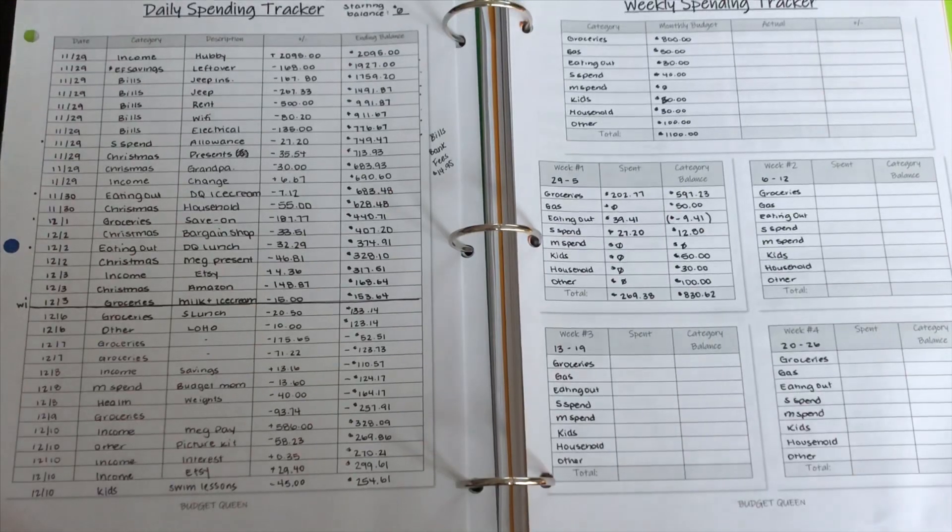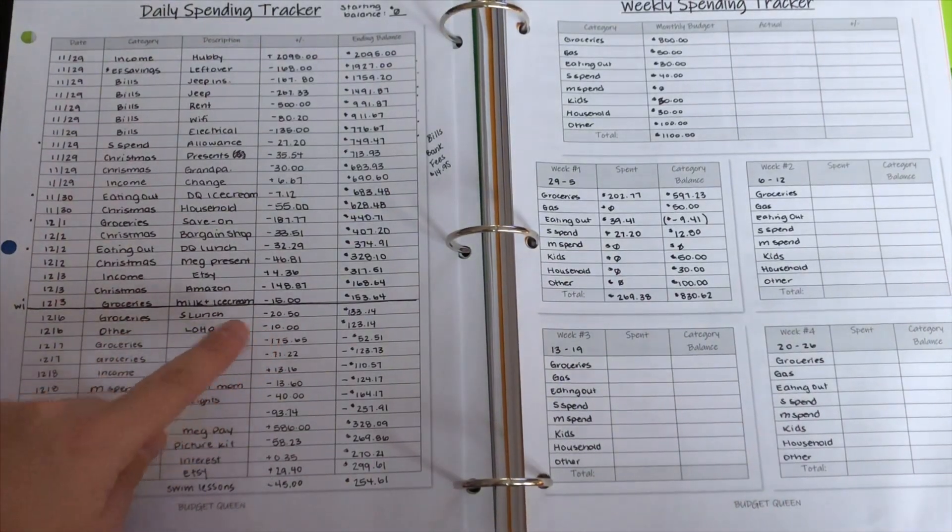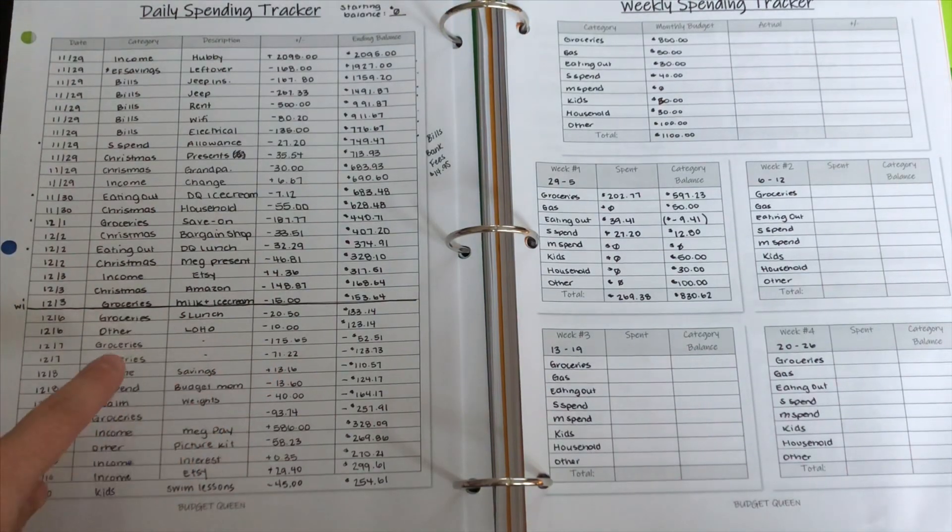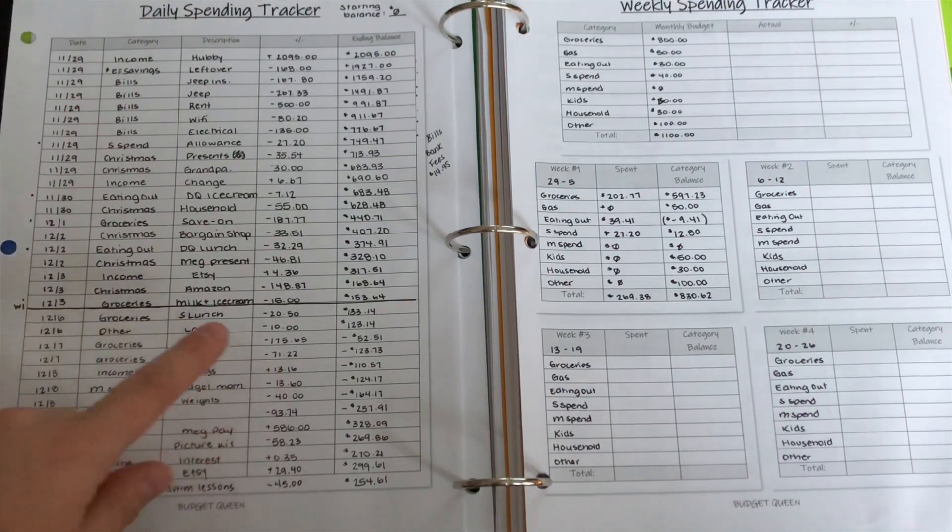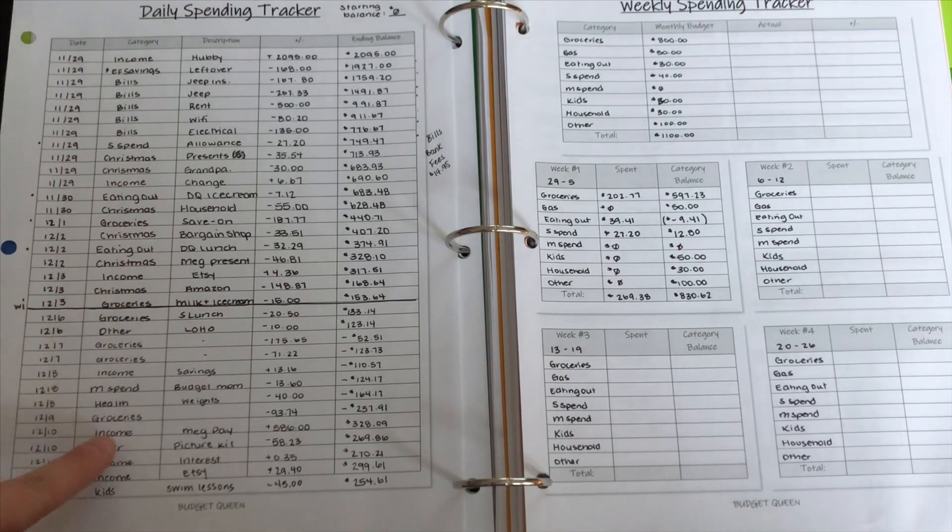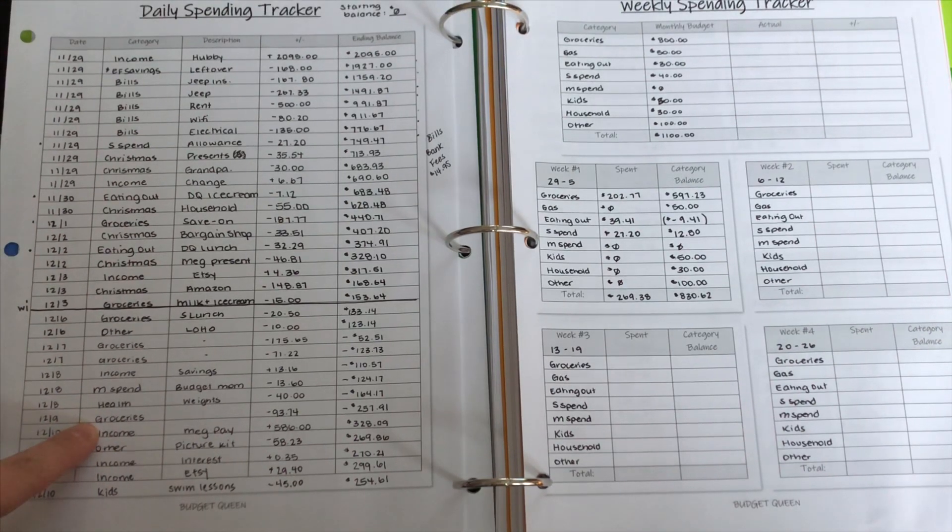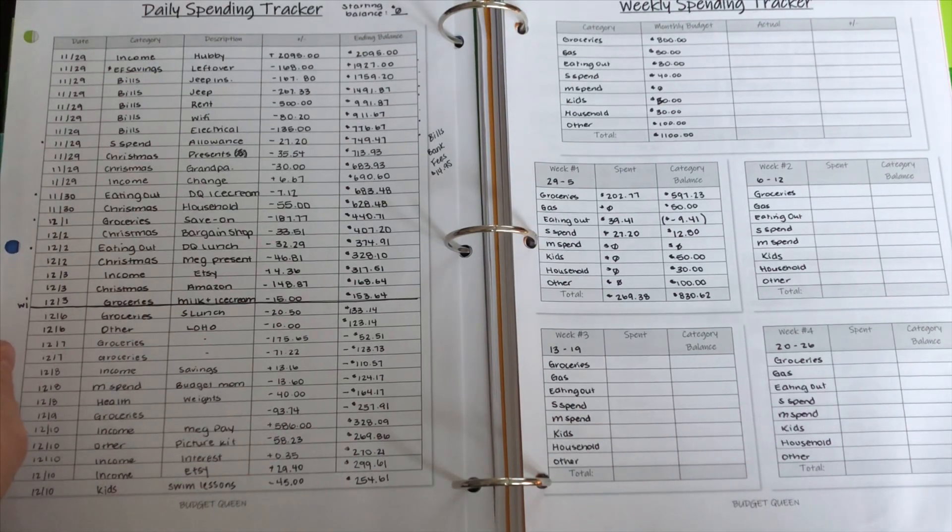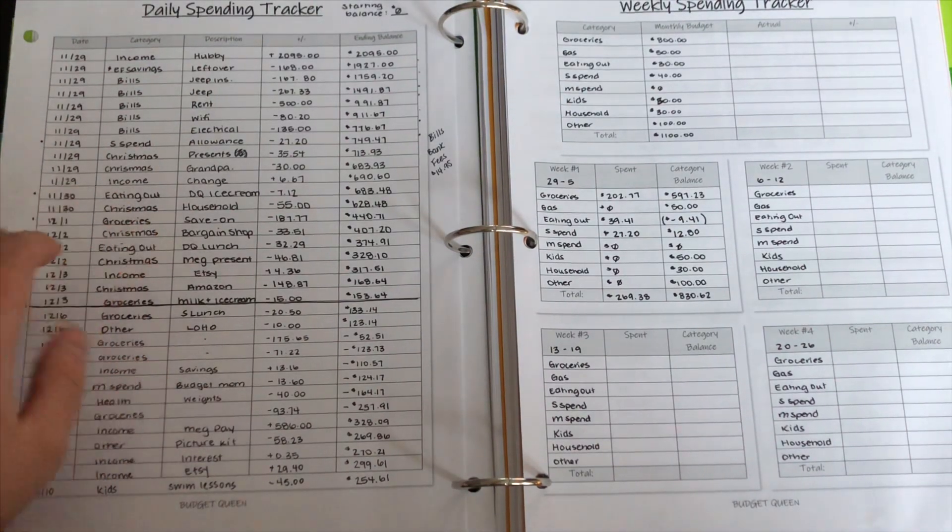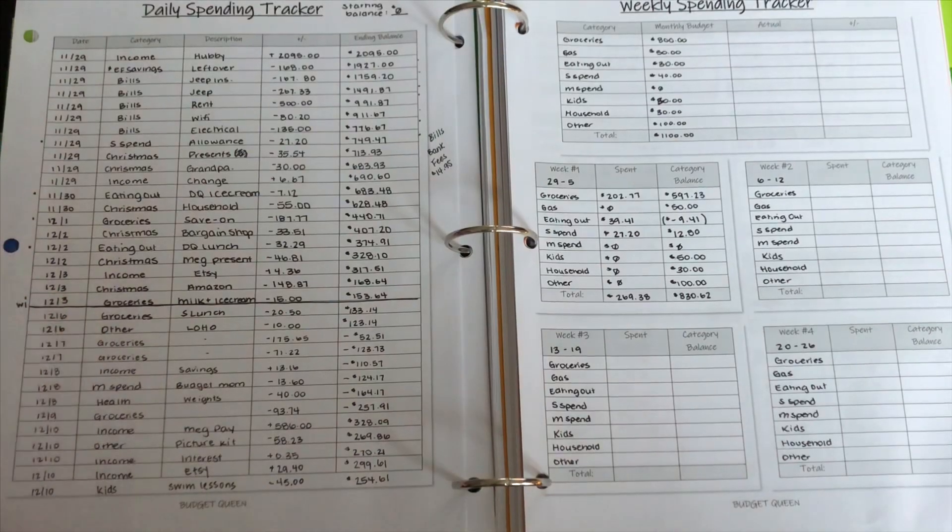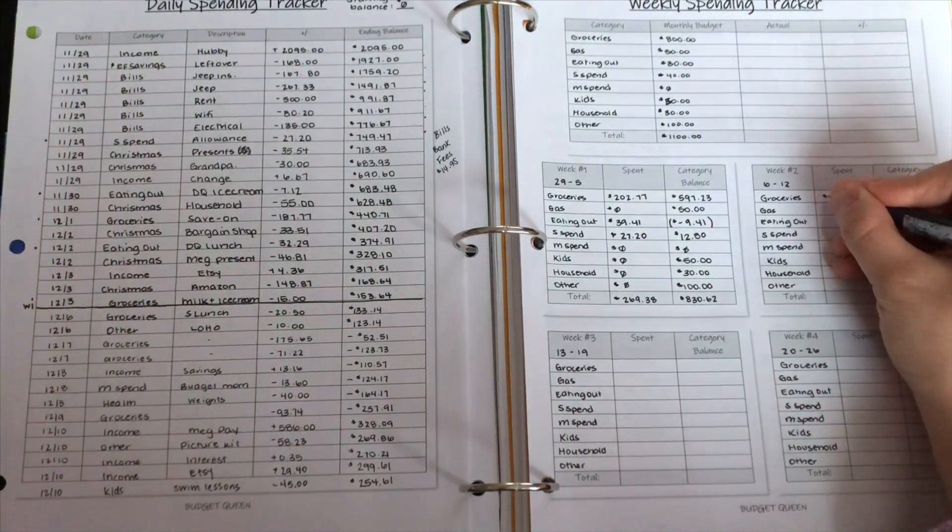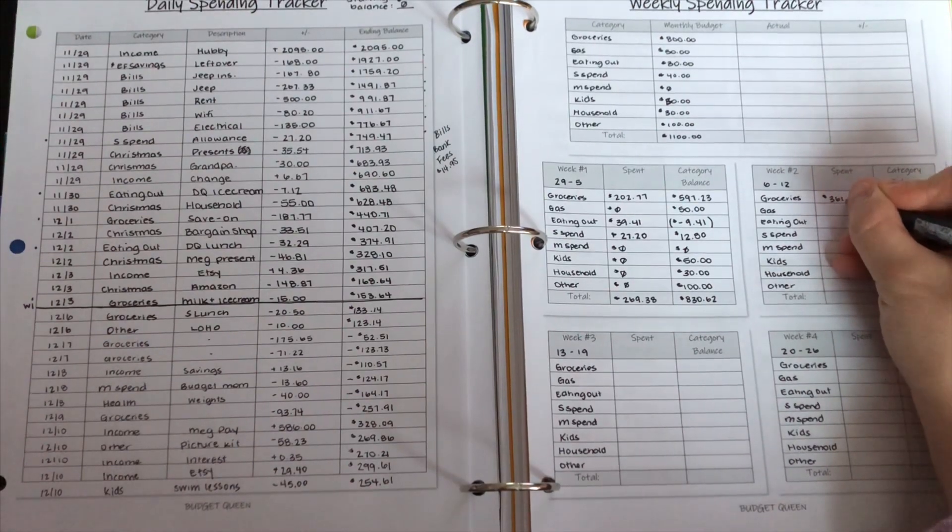So groceries here for $20.50. Groceries here for $175.65. Groceries here for $71.22. And groceries here for $93.74. We are spending a little bit more on groceries as I'm on a very clean eating diet. And groceries are expensive where I am from. So that total is $361.11.